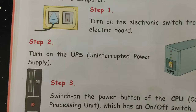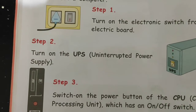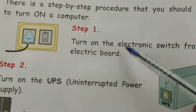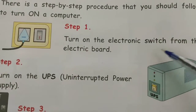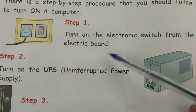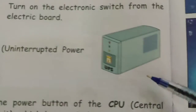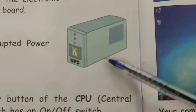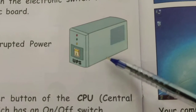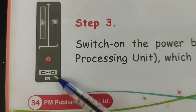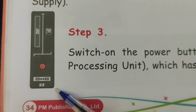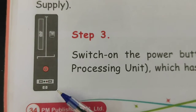There is a step by step procedure that you should follow to turn on a computer. Step one: turn on the electronic switch from the electric board. Step two: turn on the UPS — UPS stands for Uninterrupted Power Supply. Step three: switch on the power button of the CPU — CPU stands for Central Processing Unit.